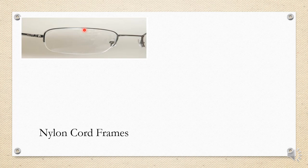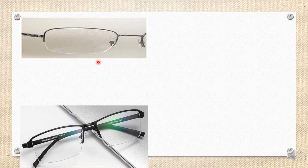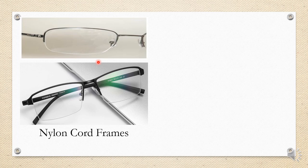The nylon cord frame can be either metal or plastic, but the lower part of the frame is absent — instead, a nylon cord keeps the lens in place. A groove is made into the lens and the nylon is tightened within that groove. Only half of the eye rim is present, which reduces weight and gives a semi-rimless finish cosmetically. This is why nylon cord frames are also called supra frames.